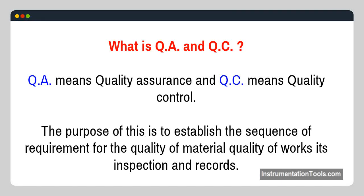QA and QC: QA means quality assurance and QC means quality control. The purpose of this is to establish the sequence of requirements for the quality of material, quality of works, its inspection and records.